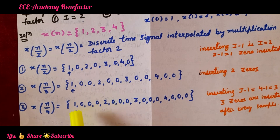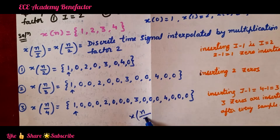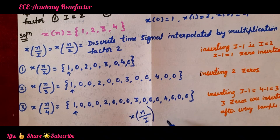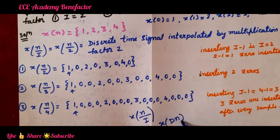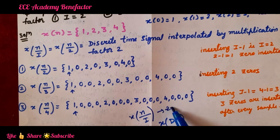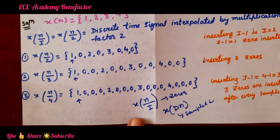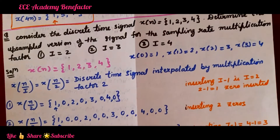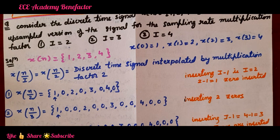In upsampling, the sequence length is increased. The upsampled signal is represented by x(n/I) and the downsampled signal is represented by x(Dn). In upsampling, zeros are inserted, while in downsampling, samples are neglected. I hope you have understood the class. If you have any queries, you can post in the comment section. Good luck, students.